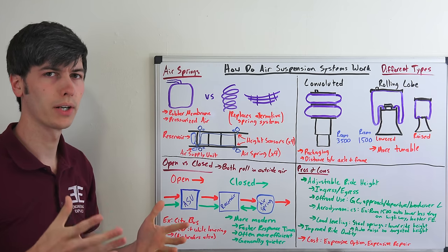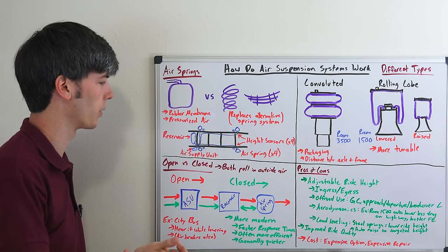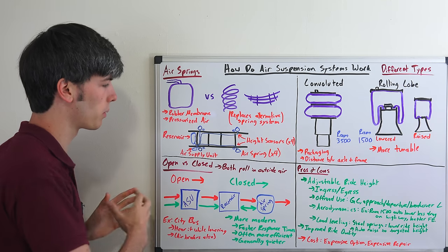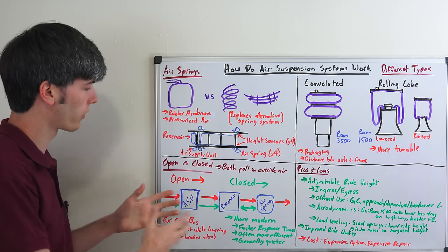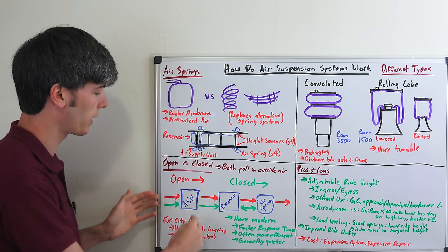Now another major differentiator for air suspension systems is whether they are open or closed systems. Both of these systems are going to be pulling in outside air. However, they're going to operate slightly differently.